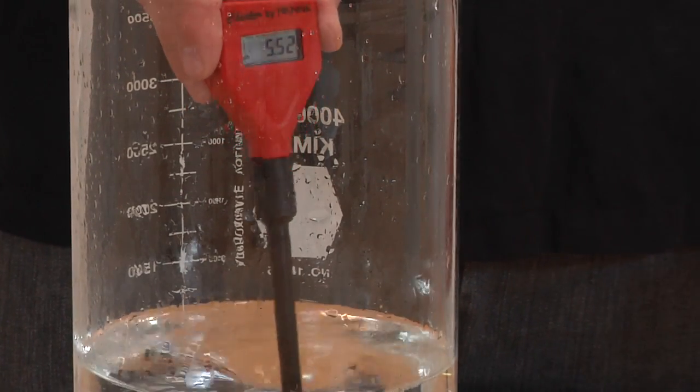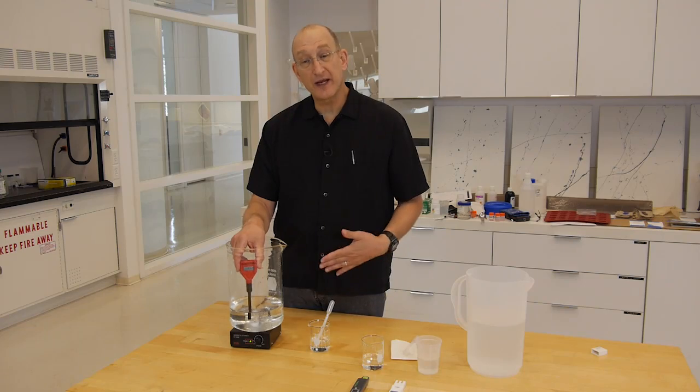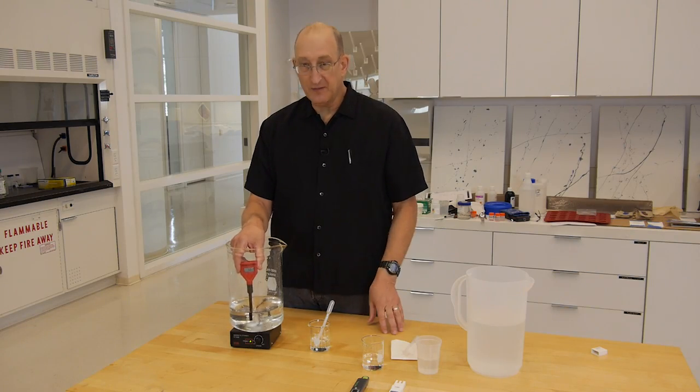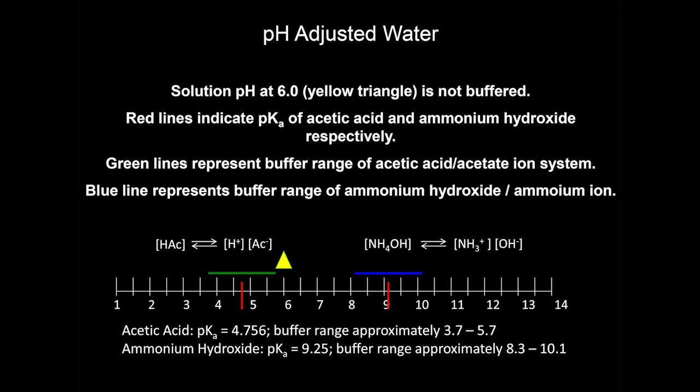We've added enough ammonium hydroxide to get the pH kind of close to where we want to go. We want to slow down the addition of the ammonium hydroxide. The pKa for acetic acid is 4.76, so its buffer range is about 3.7 to 5.7. So we're kind of just outside the buffer range. As we get to 6, we'll be outside the buffer range. So as we're adding ammonium hydroxide, the pH will change very quickly as opposed to what we saw a minute ago where it takes a lot of ammonium hydroxide to change the pH.